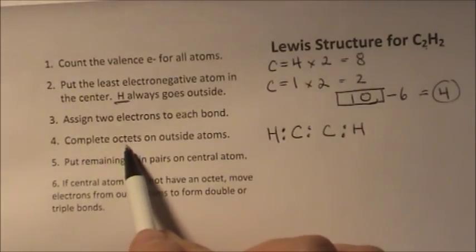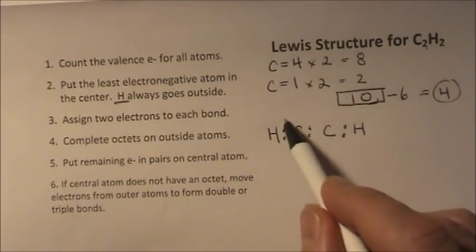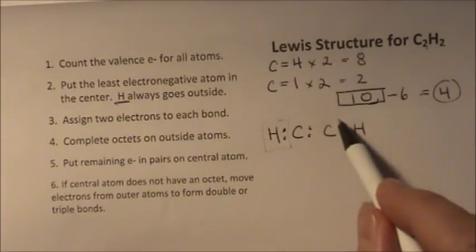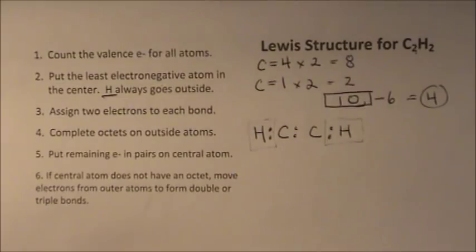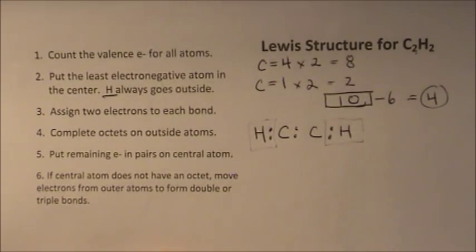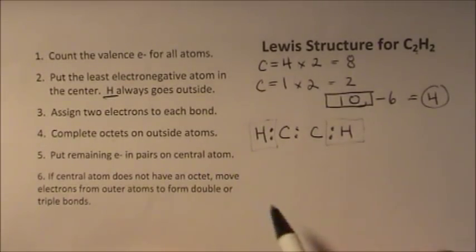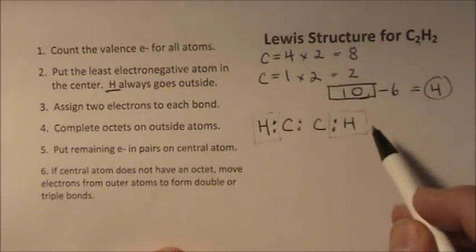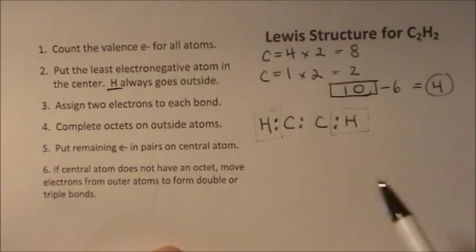Now we need to complete the octets on the outside atoms. In this case, hydrogen right here is already full. It's the exception. It only needs two valence electrons to be full, to have a full outer shell or octet. Everything else needs eight, but hydrogen needs two. So we've got four valence electrons. Let's put the remaining electron pairs in the central atom, or in this case, atoms.